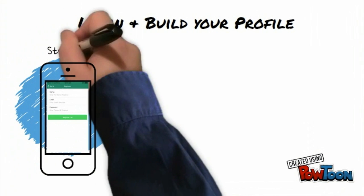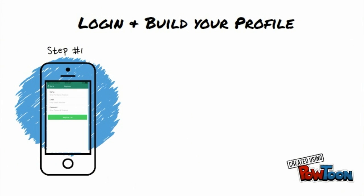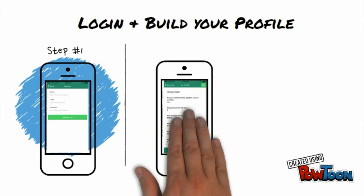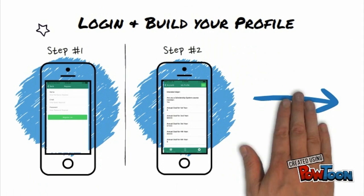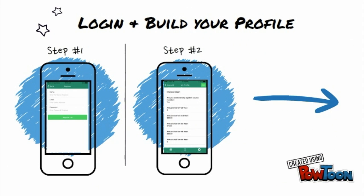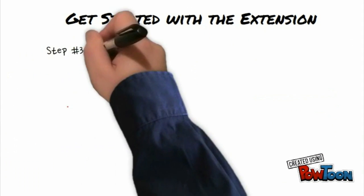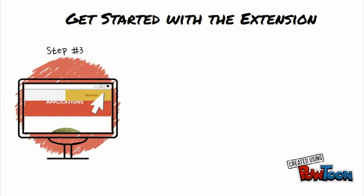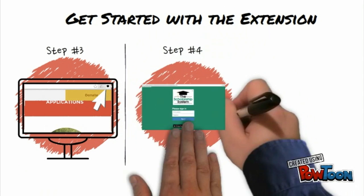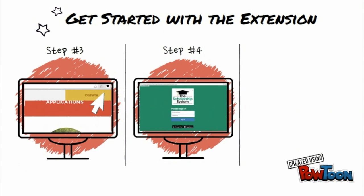First, create a login so you can save all your information in one place. Then fill in your profile under the account button and head over to the Chrome extension. Click on the graduation cap and you'll be prompted for your same login from the app.